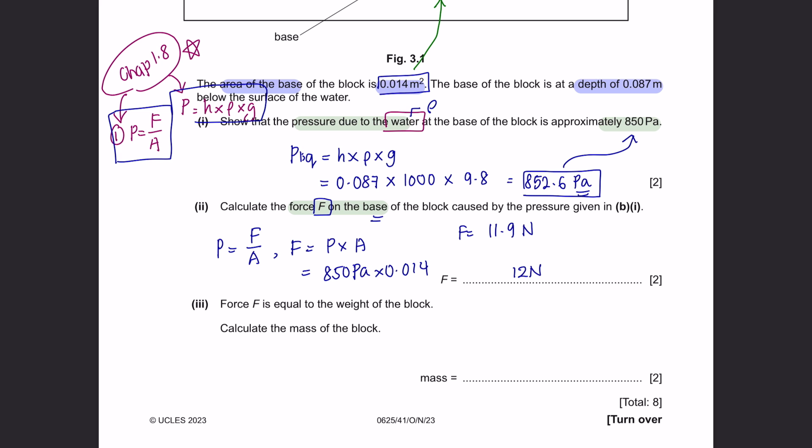Part 3. Force F is equal to the weight of the block. Calculate the mass of the block. Mass is calculated in kilograms, and weight is calculated in newtons. The relationship between weight and mass is that weight is equal to the mass of an object times the gravitational force. So, to calculate the mass here, it will be weight over gravity. It's been given to us that the weight is 12 newtons. Divided by the value of g, which is 9.8, you will obtain a mass of 1.2 kilograms.